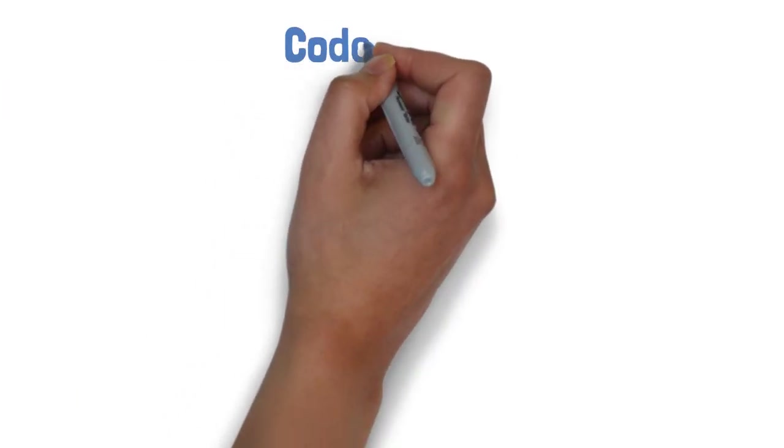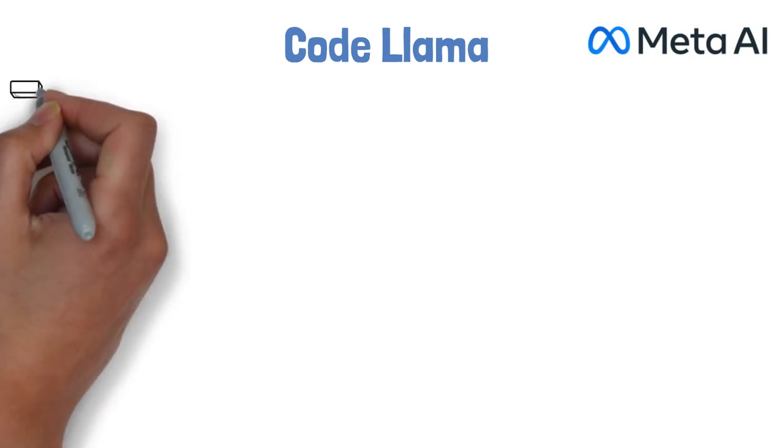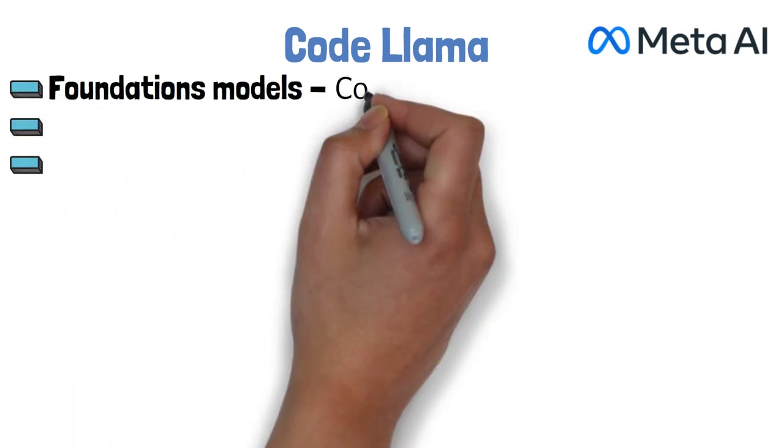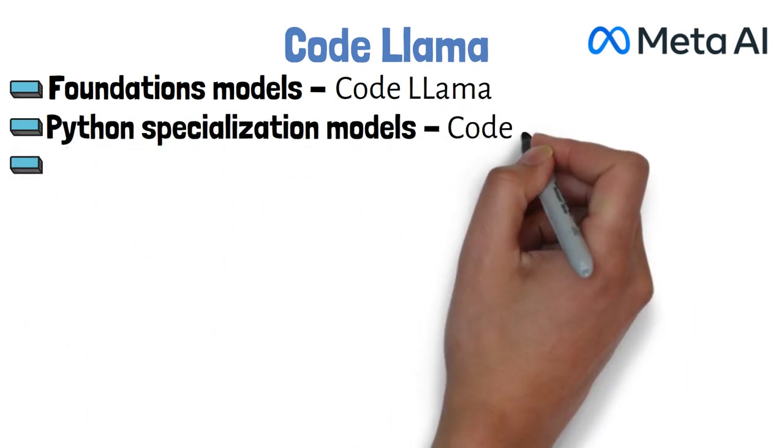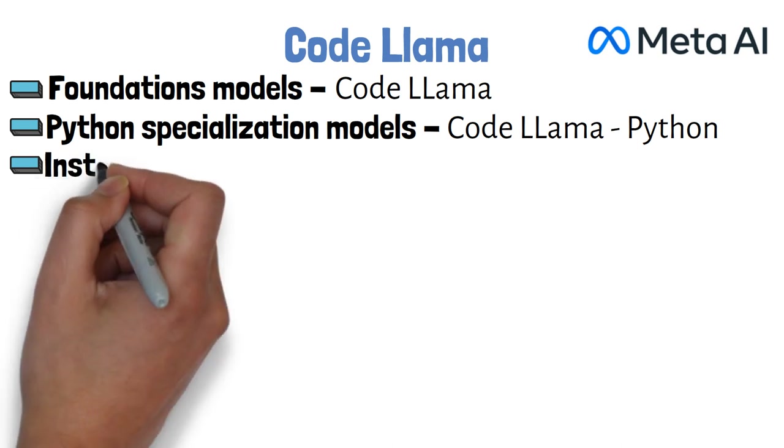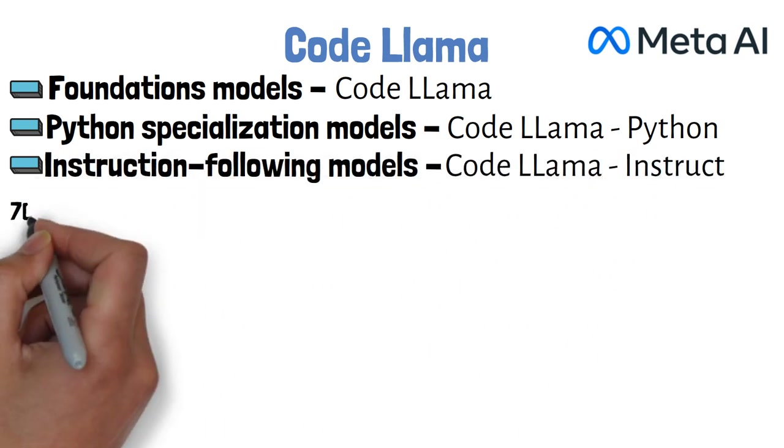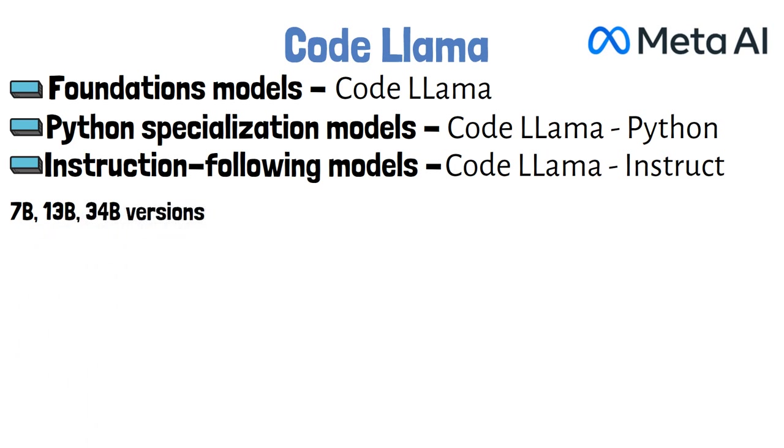Thank you for joining this video about CodeLama, a new family of open-source large language models for code by Meta AI that includes three types of models: foundation models called CodeLama, Python specialization models called CodeLama Python, and instruction-following models called CodeLama Instruct. Each type was released with 7 billion, 13 billion, and 34 billion parameters.